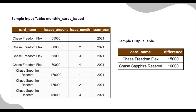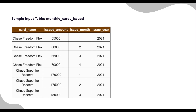The final output should show the card name and the calculated difference sorted from largest to smallest. Let's understand the calculation from the sample input table. We can see two cards: the Freedom Flex card and the Sapphire Reserve card. For the Freedom Flex card, the issued amounts across months are: January — 55,000, February — 60,000, March — 65,000, and April — 70,000. So the maximum issued amount is 70,000 and the minimum is 55,000, giving a difference of 15,000.